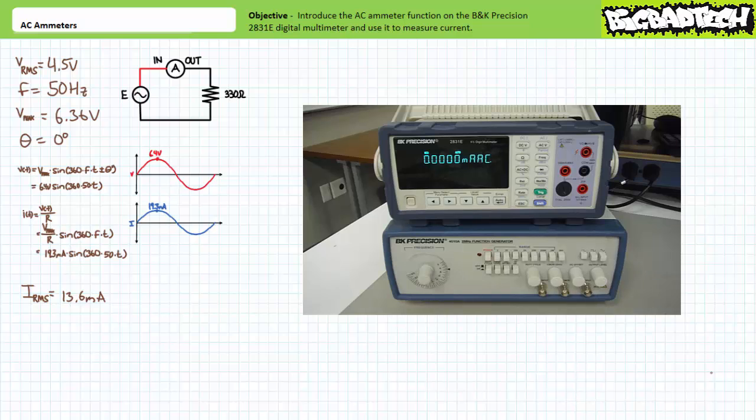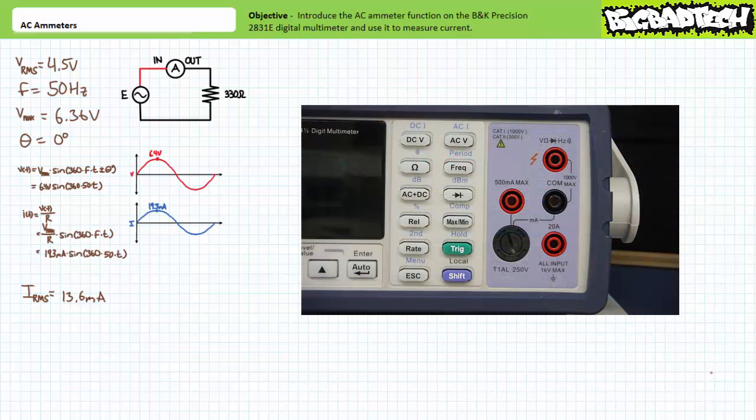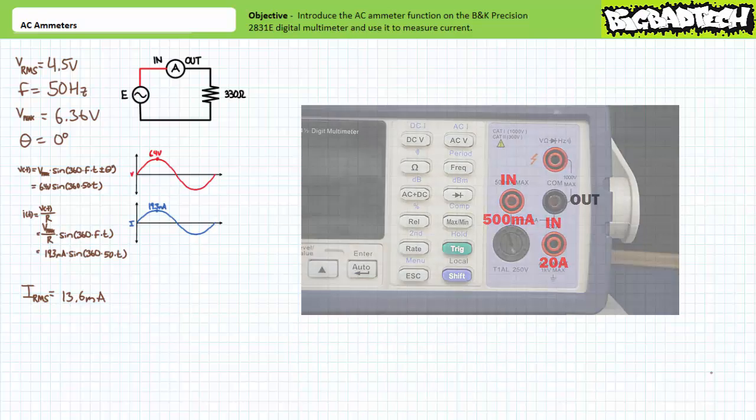Note ammeters use different input ports and measurement circuitry than the other functions offered by the DMM. The BK Precision 2831E DMM is limited to the measurement of current below 500 milliamperes using the input port on the left and below 20 amperes using the other input port. The current we intend to measure is well below these upper limits. The 500 milliampere input port on the left will give us our most accurate reading.